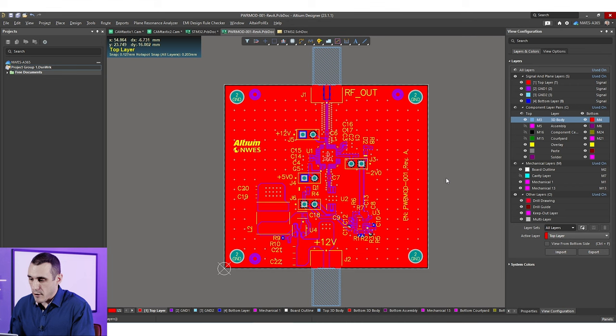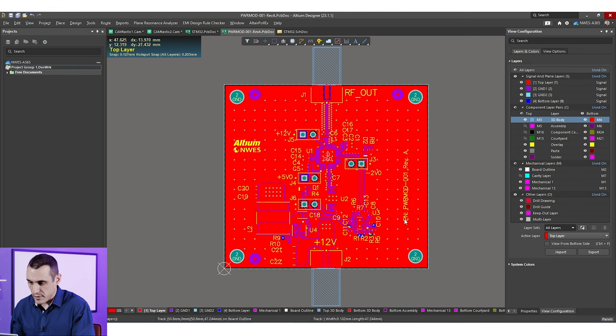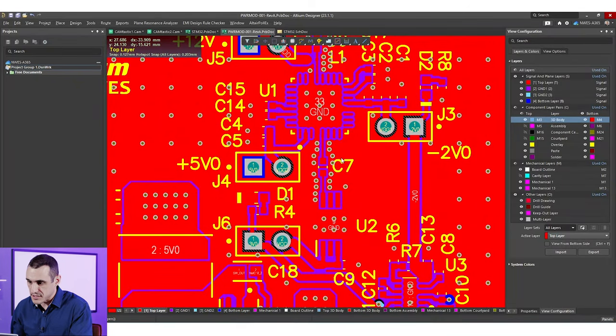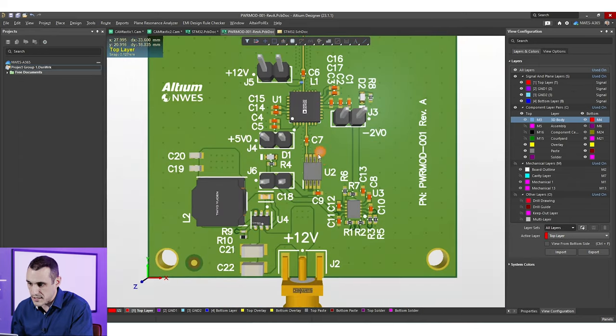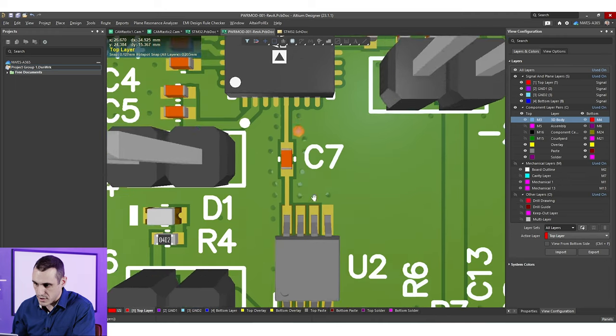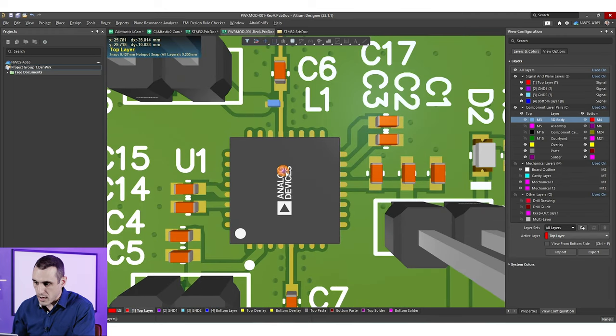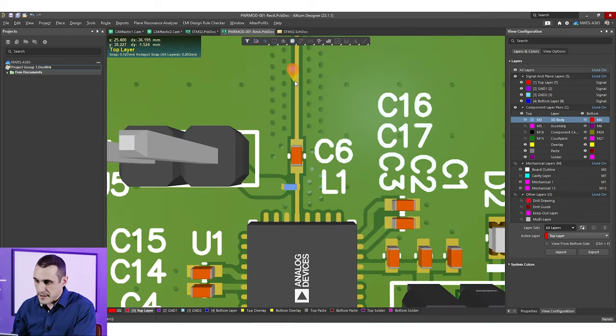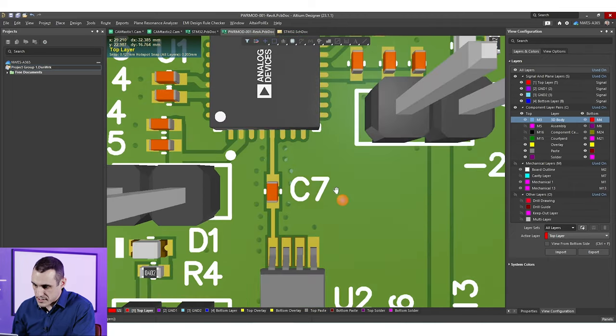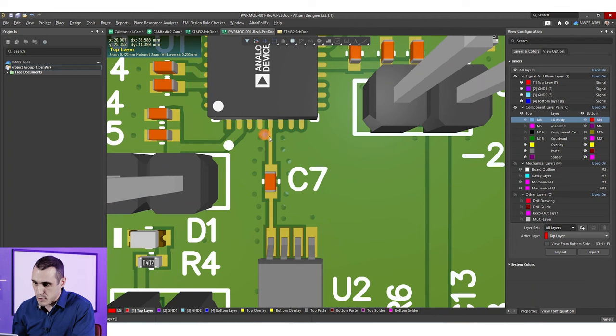I'm inside of our power amplifier module project that we've looked at in several other videos and here what I want to show is that on some of these traces we do have solder mask removed and you can see this if you just take this and put it into 3D. You can see here this trace coming out of U2 which is our oscillator going into U1 our power amplifier and then that feed line that comes out from the output and then goes to our SMA connector all of those traces have the solder mask removed because we can see the copper here in the top layer.